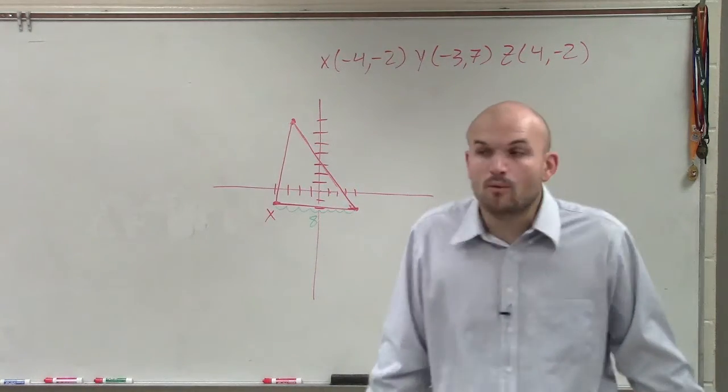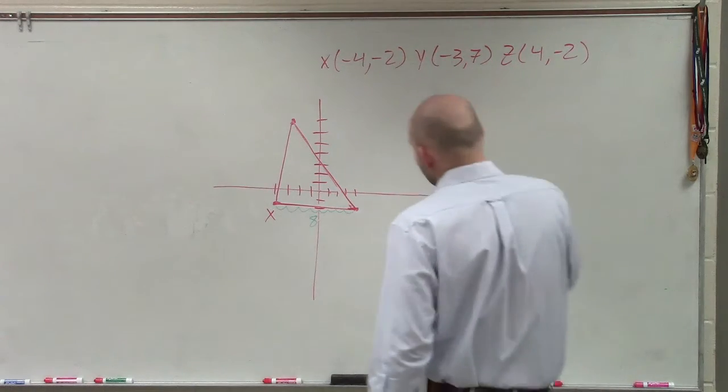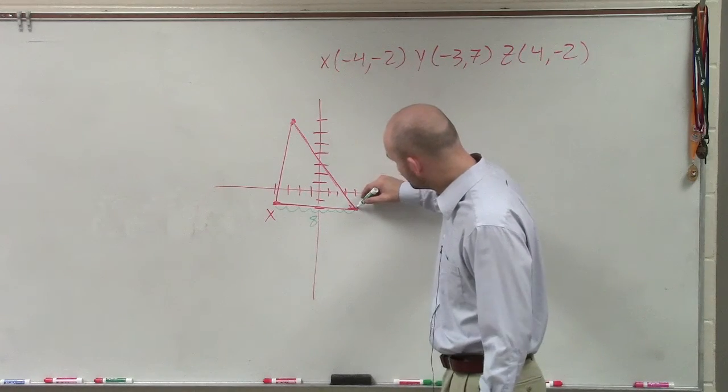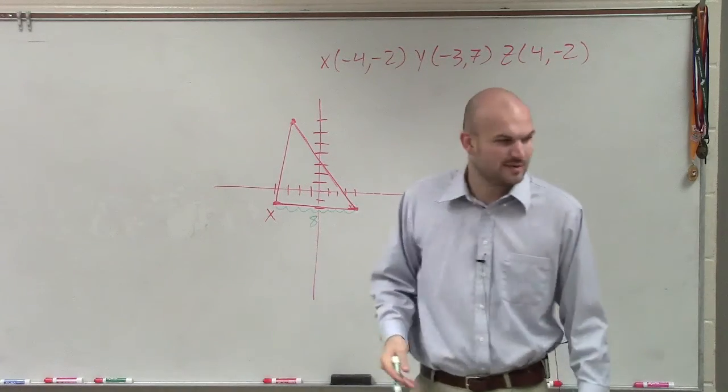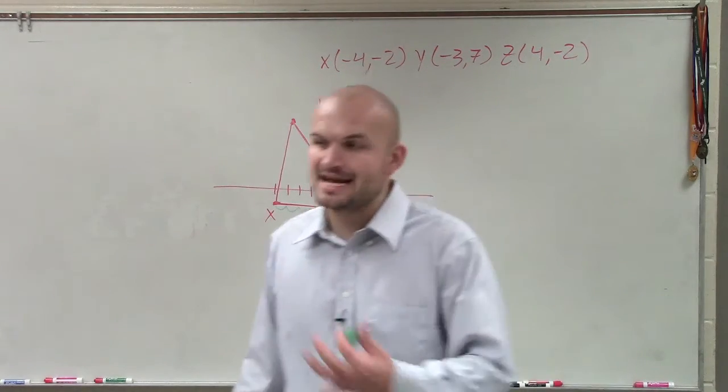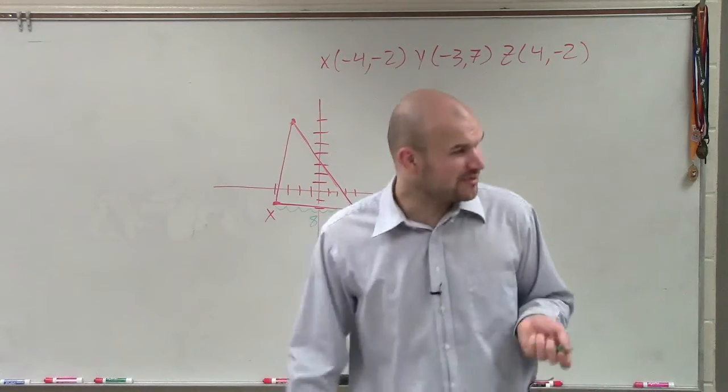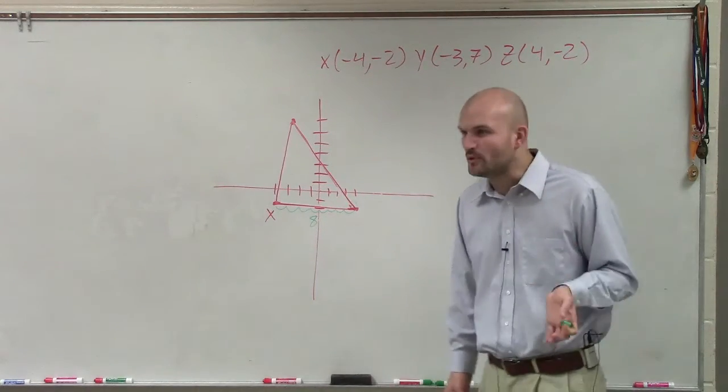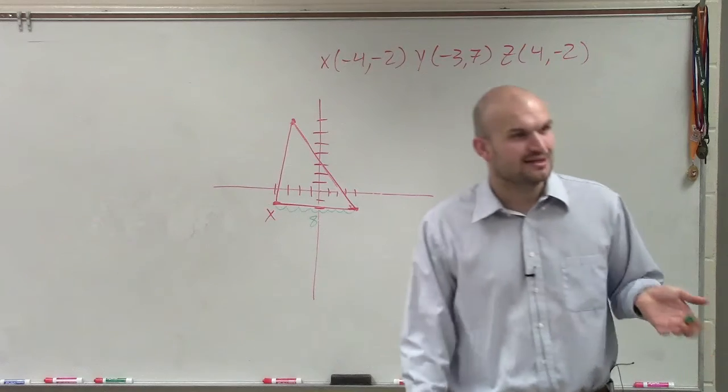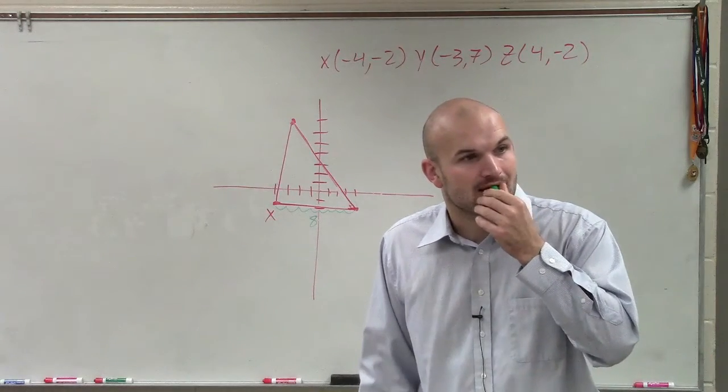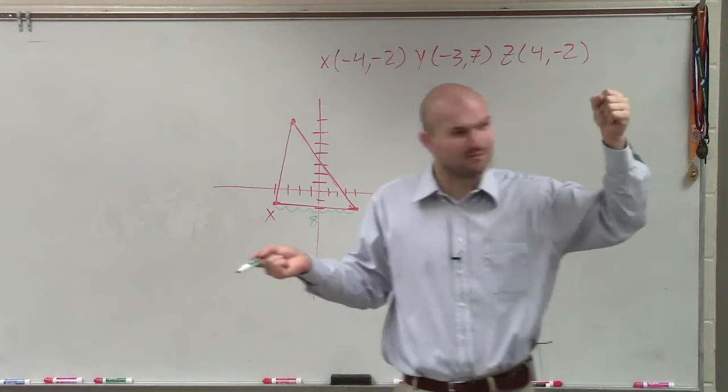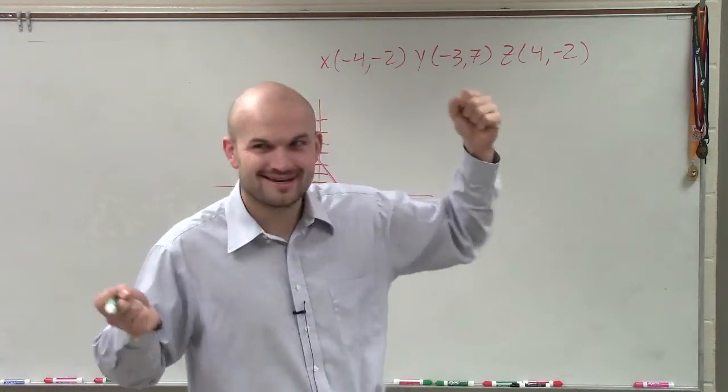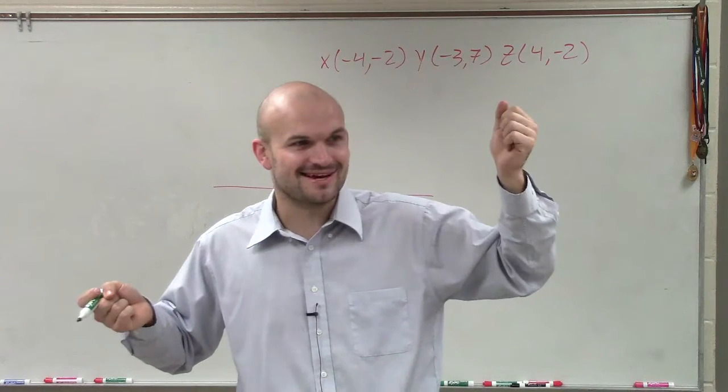But now we need to determine what is the length of the other two sides. Well, guys, you can't just estimate and say, well, this is going to be 1, 2, 3, 4. It doesn't work like that. That'd be an estimation, and we're trying to find the exact value. So does anybody remember a formula that we did between two points to find the distance? Slope formula? Well, the slope formula is going to tell us the rate of change, but I want to find the distance.